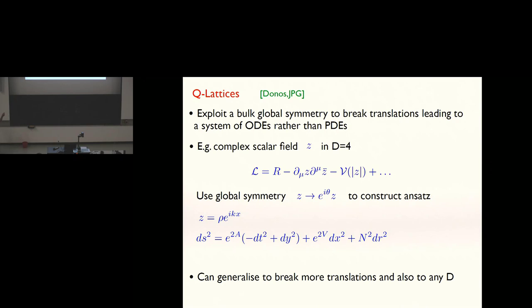That allows you then to write down an ansatz for spatially modulated fields that only requires you solve ordinary differential equations. The scalar just has this form. So I've just picked out one direction, the spatial x direction is preferred. R is the radial holographic direction. And z is just rho cos kx plus i sin kx. And rho, a, b, and n are all functions of R.